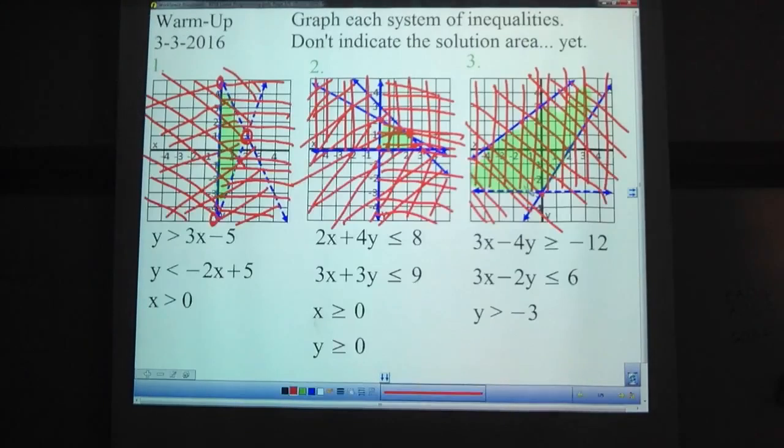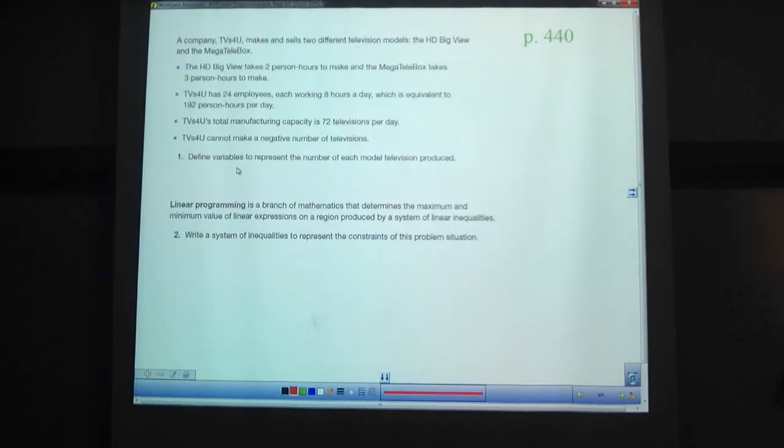Okay. So, that's multiple things like that. Let's look at this here, a story problem. Should be super fun. A company, TVs for you, makes themselves two different television models: the HD BigView and the MegaTelebox. And let me just say MegaTelebox, that's awesome. In fact, let's also highlight HD BigView. Those are our two types of TVs, and I bet there are two variables. It's a classic setup for a problem that you have. In the first sentence, it tells you two things, and those are your two variables for the rest of the time.